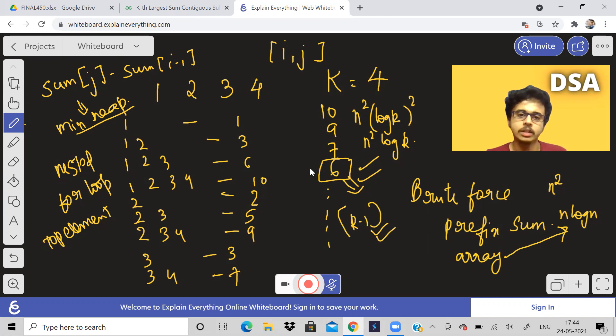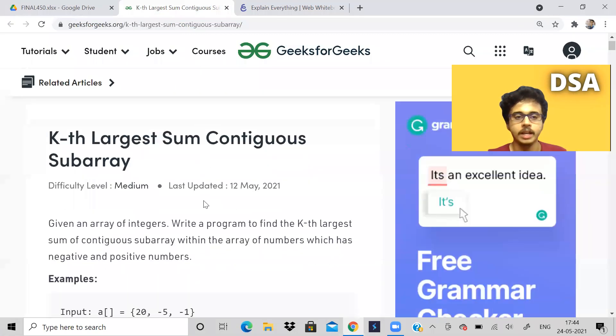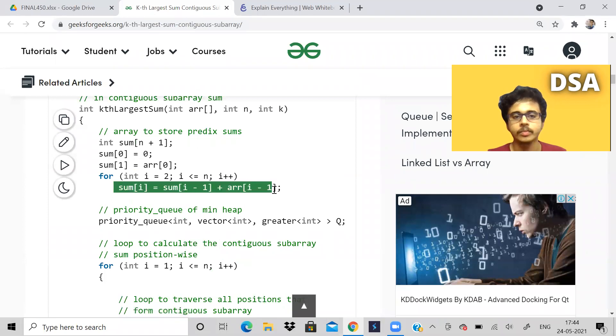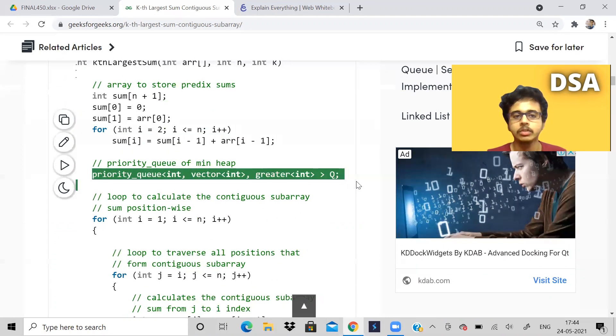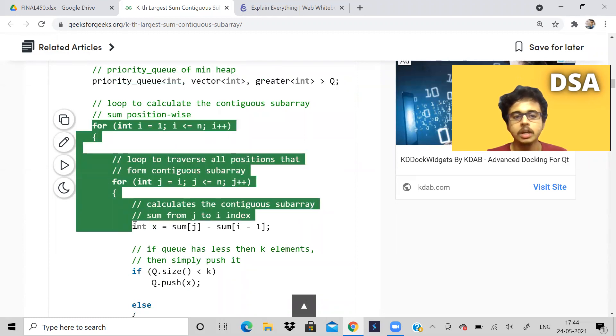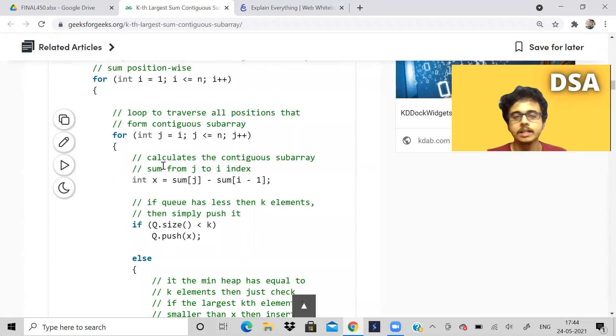See what they have done. If I show the code, they have taken the prefix sum in an array called sum. After that, they have declared a priority queue which is a min heap. They are using nested for loop in order to find out the subarray from index i to index j for all i from 1 to n and j from i to n. This is brute force method. This is how you find out for each and every subarray what is the sum. I don't think there is any other method.